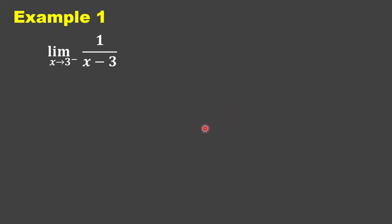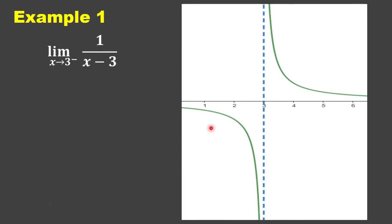Let us check using its graph. We can see that we have the vertical asymptote at x equals 3. And as x gets closer to 3 from the left, f of x decreases without bound. Therefore, this is negative infinity.